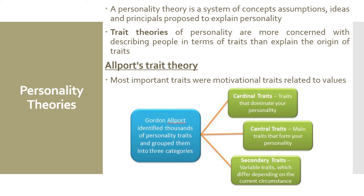Allport's trait theory. His view was that the most important traits are motivational traits related to values. For example, a man who values money more than family life would be expected to accept a promotion at work that would mean getting more money but would require spending more time away from home. Allport believed that there are cardinal, central and secondary traits ranked in order of importance. Cardinal traits are those that are so important to an individual that they dominate that individual's life — for example, the desire for social justice is a trait that dominated Mahatma Gandhi. Allport believed that very few people have cardinal traits. Central traits are more common — these are important traits that influence and organize most of our behavior; the desire for power is an example. Secondary traits are much more specific and less important — for example, a specific food preference is regarded as a secondary trait.